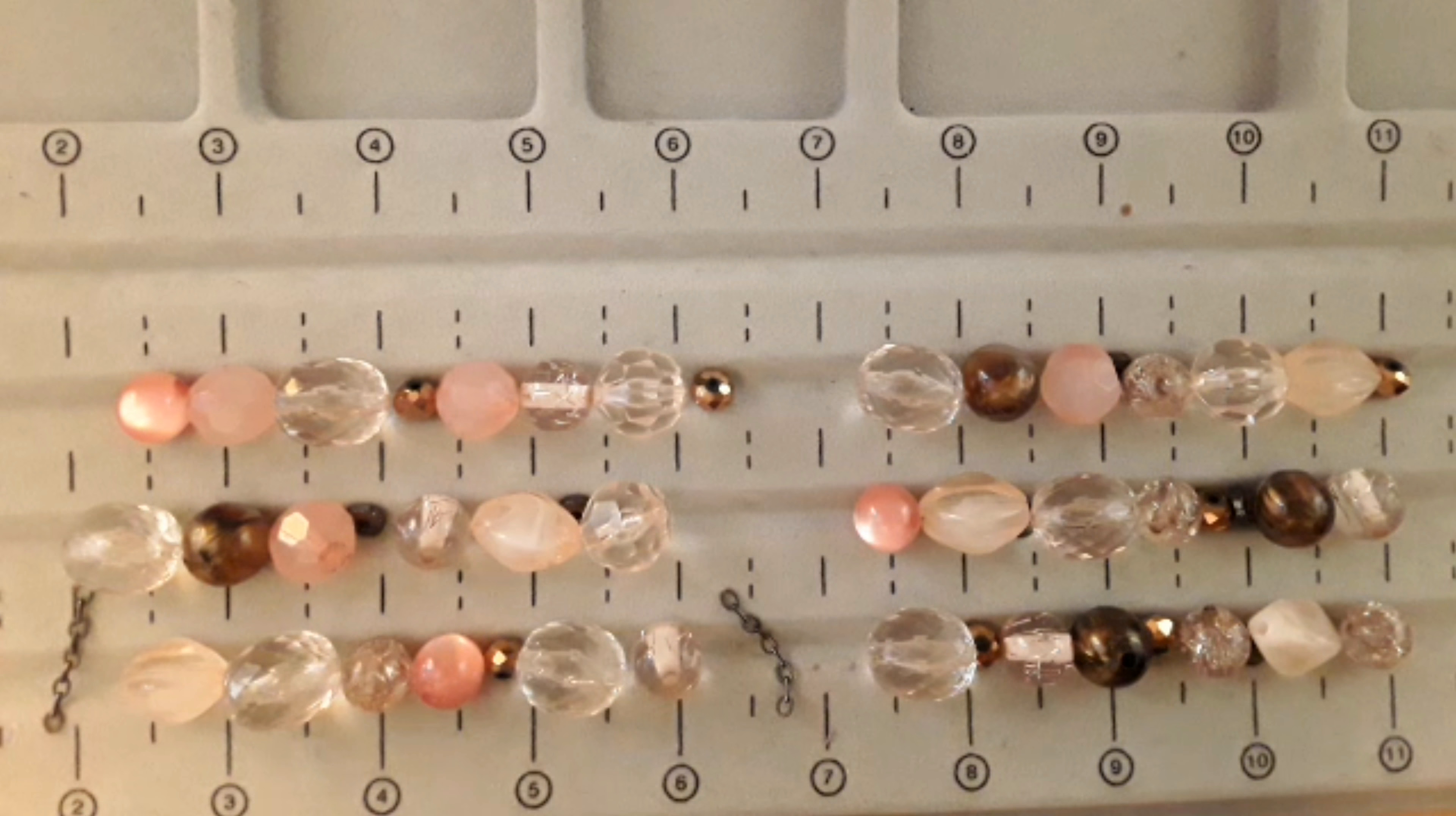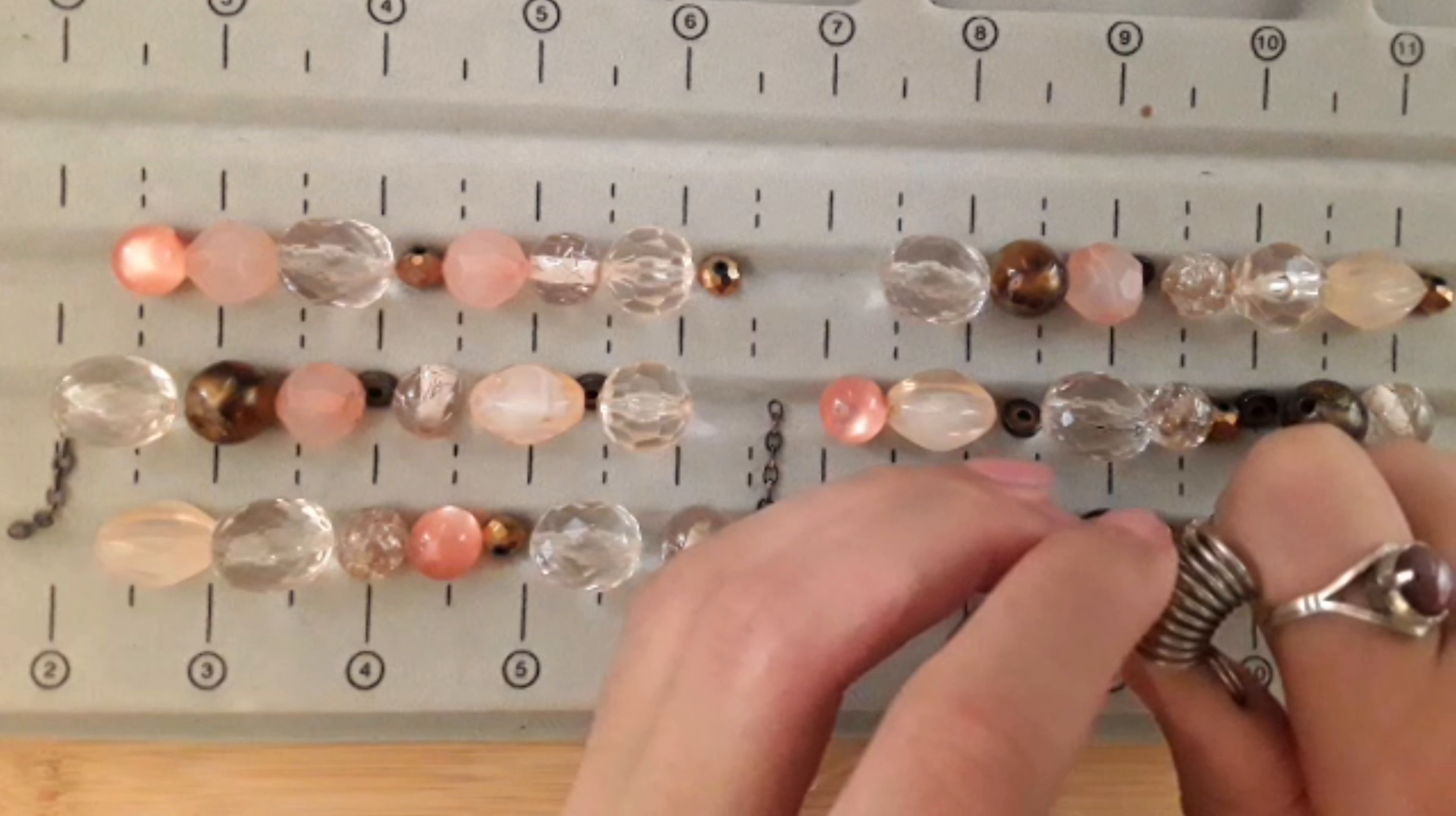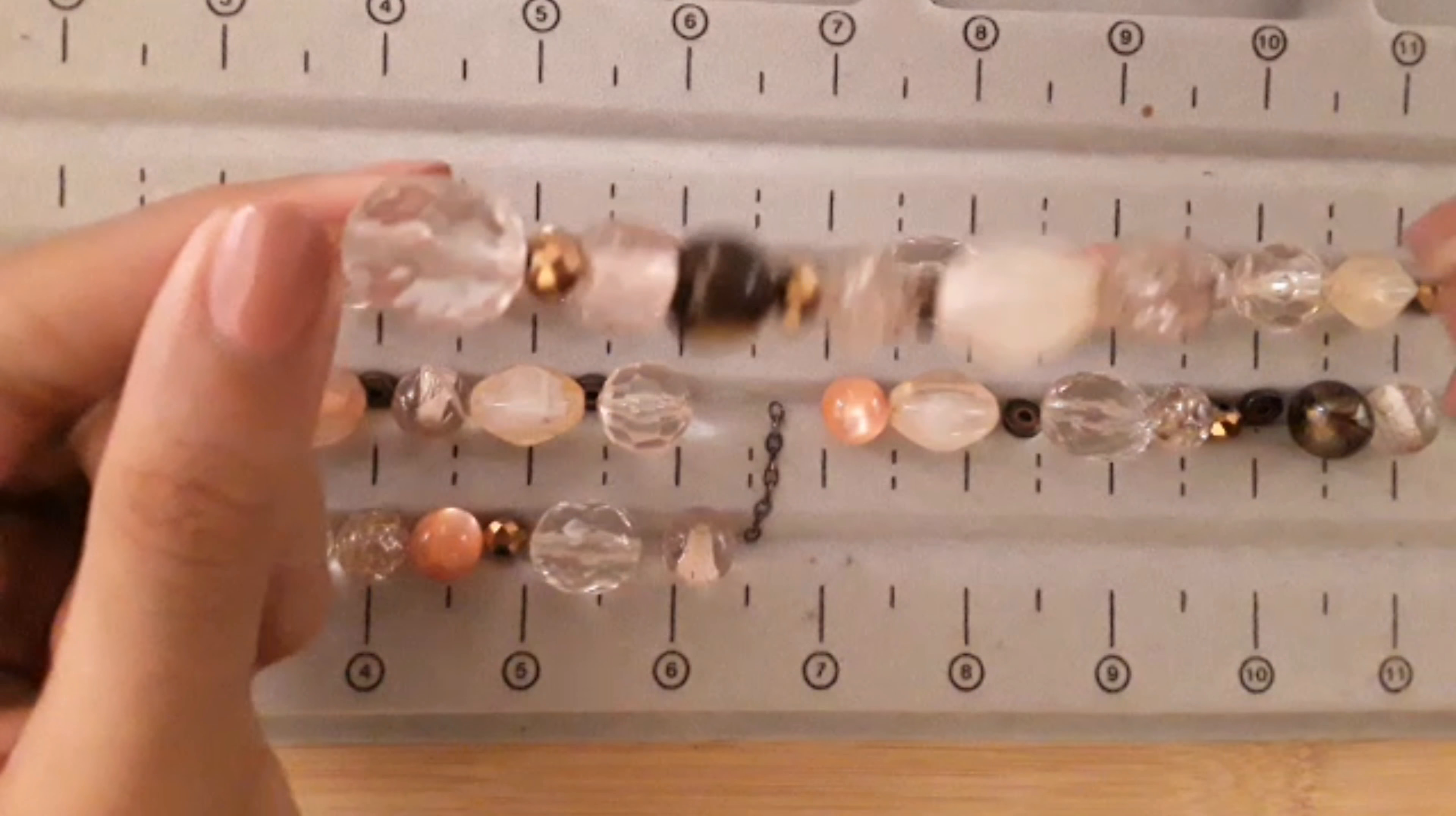I'm just going to put my bead stopper at the end so none of the beads will fall out. Now I have put in all the beads on my stretch cord that led up to my chain link. Now I'm going to put the first one, or the bottom of my chain link, on the stretch cord.